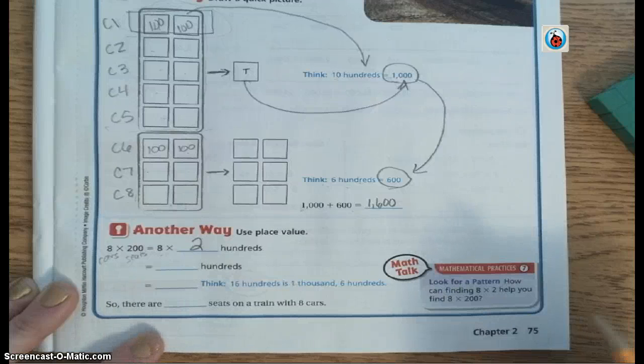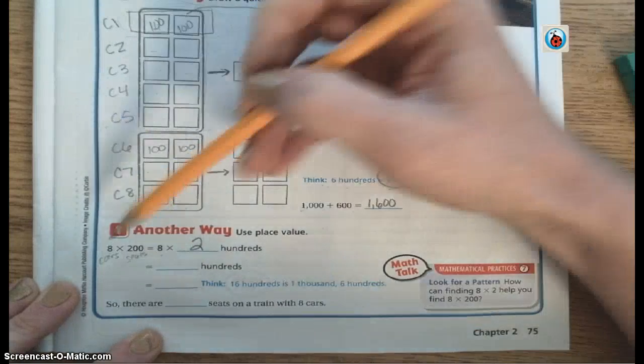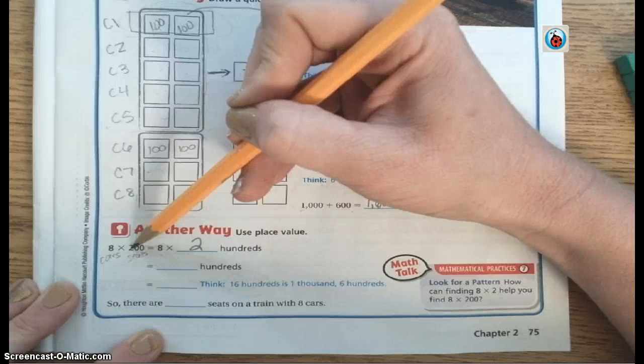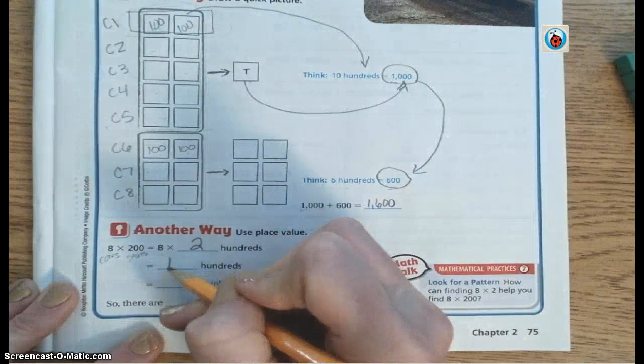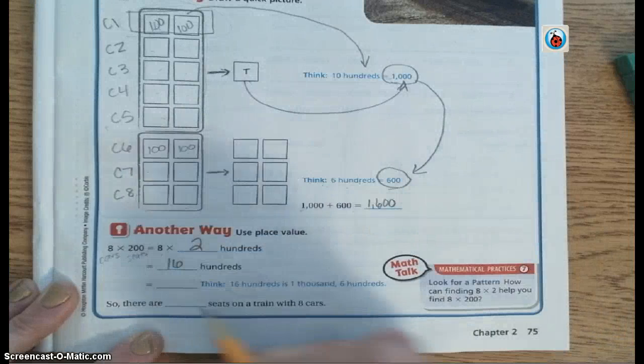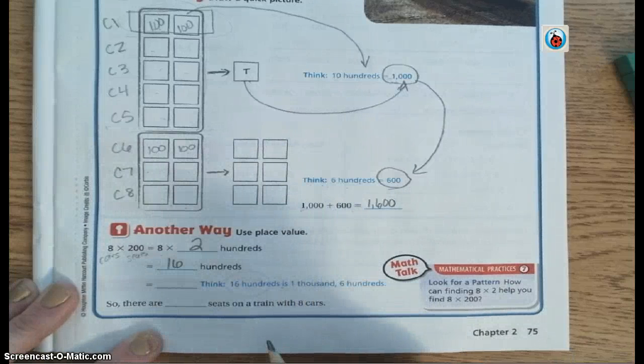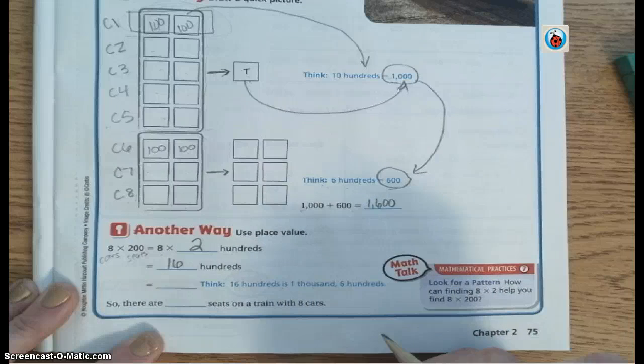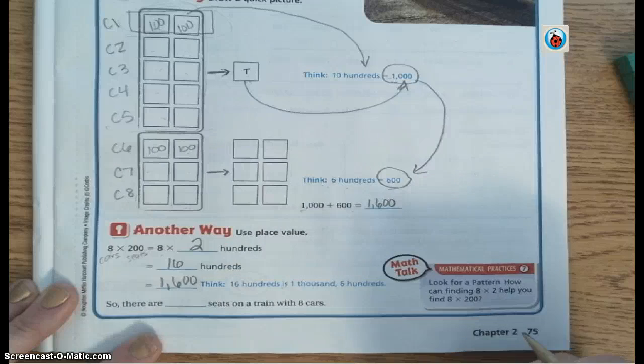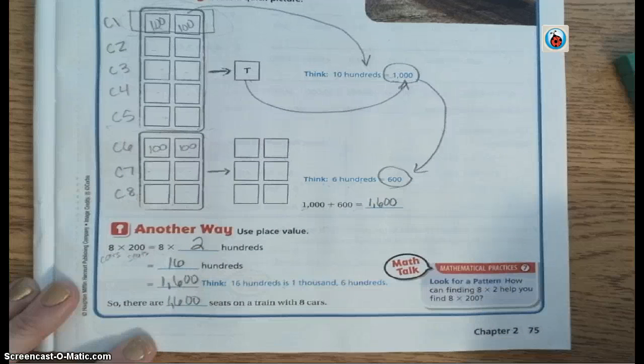So how many hundreds do we have? So if you were to think about how many hundreds you would have, you'd do eight times two. And eight times two is what? Eight times two is 16. So you have 16 hundreds. Think in your head. 16 hundreds is 1,600, just like we saw in the picture above. So 1,600. So there are 1,600 seats on a train with eight cars.